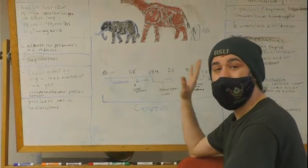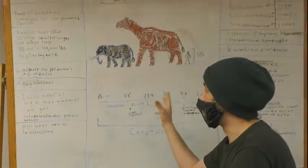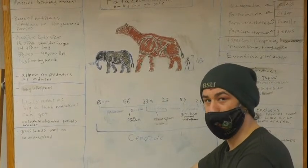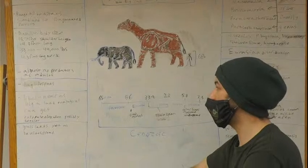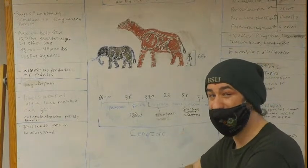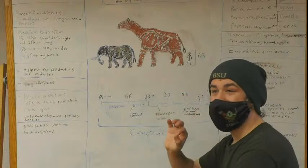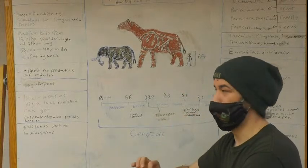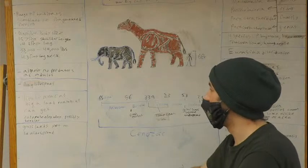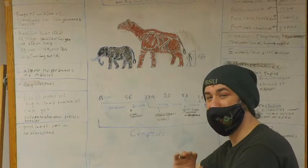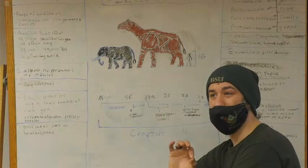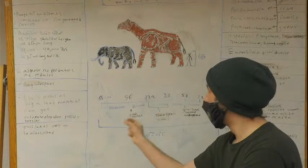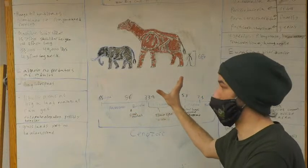And again, I want to stress the massive body size of this animal. 15.7 feet at the shoulder is pretty normal for the skeletons we've got. 24.3 feet in length. A neck, just a neck, that is 4.3 feet long. Not to mention the head on top of that. And weighing potentially anywhere from 33,000 pounds to 44,000 pounds. Multi-ton animals.